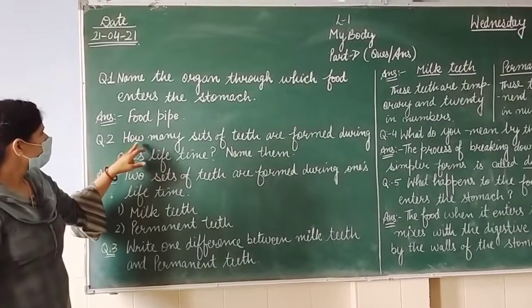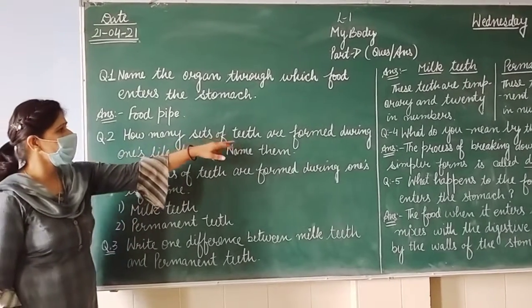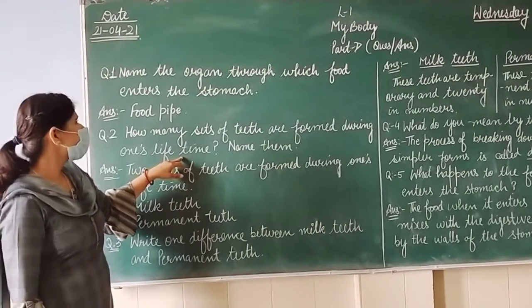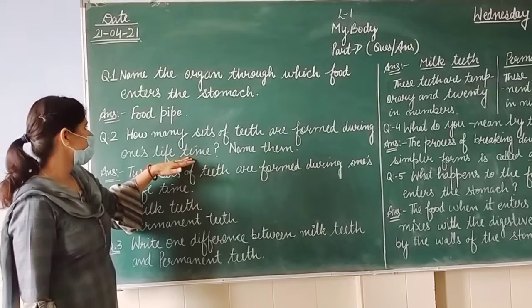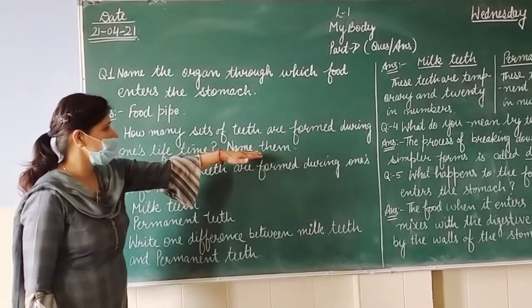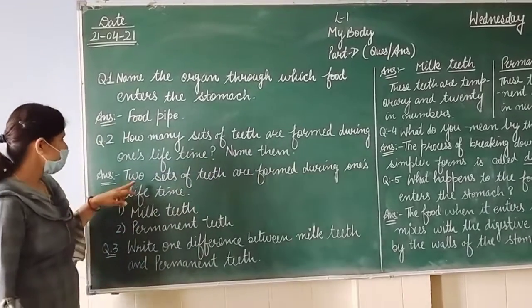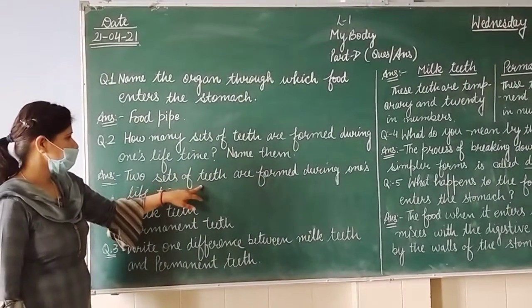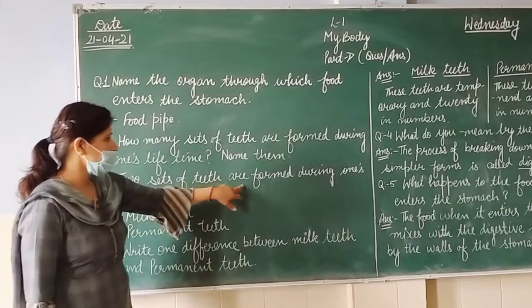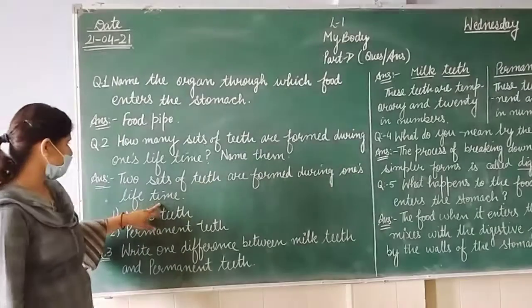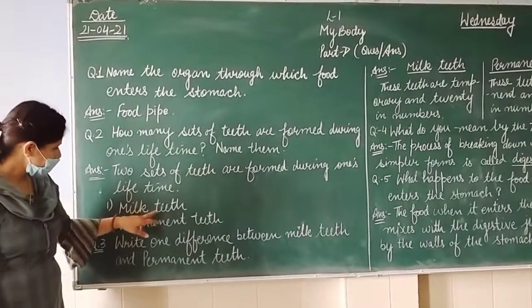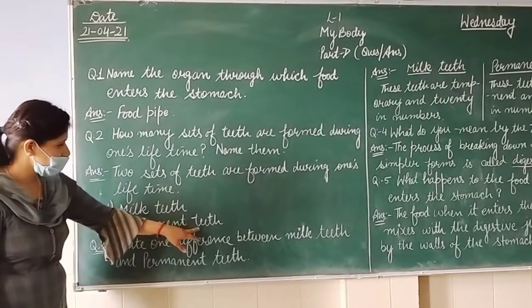Question 2 is: how many sets of teeth are formed during one's lifetime? During one's lifetime mein kitnay tarah ke teeth formed hotay hain. So the answer is: two sets of teeth are formed during one's lifetime. First are milk teeth, and second are permanent teeth.